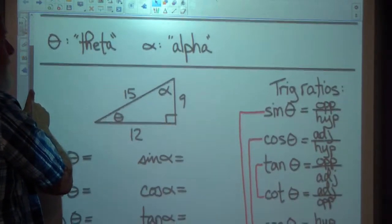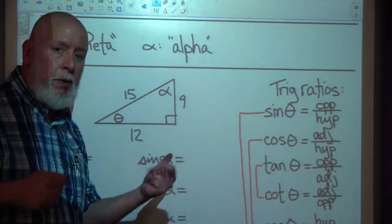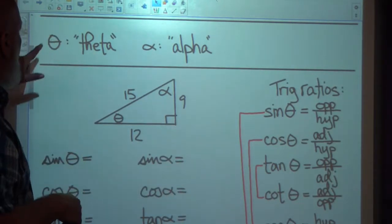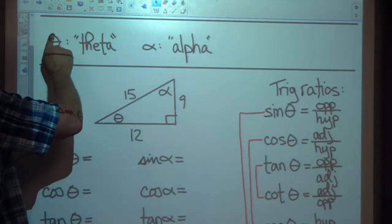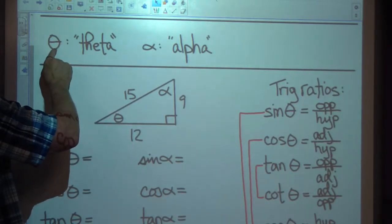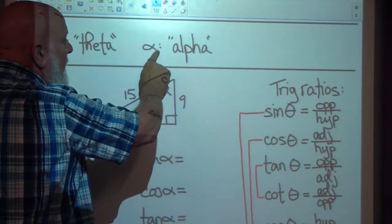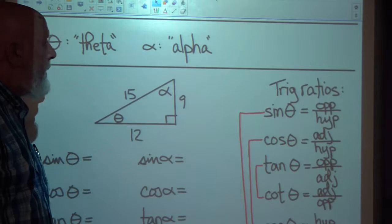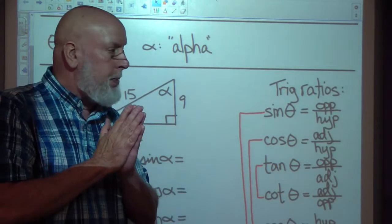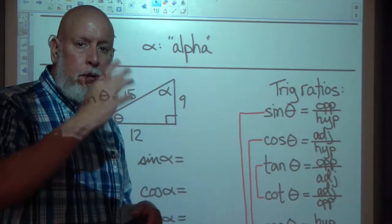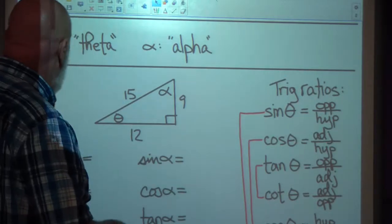I'm going to introduce a couple of variables you'll see. Instead of x's and y's, we're going to often see what looks like a little plastic Easter egg — it's called theta. And the one that looks like a little fish is alpha. They're Greek letters, and you'll see them used a lot in higher math. They're just variables, like x or y, so don't let them scare you.